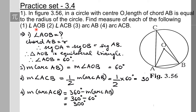First, we need to find the measure of angle AOB — the central angle of arc AB. The observation is that chord AB equals r, the radius. Segment OA equals segment OB equals segment AB, since OA and OB are radii and chord AB equals the radius by given information. So all three sides are equal; triangle AOB is equilateral, and hence all angles are 60 degrees. So angle AOB is 60 degrees.